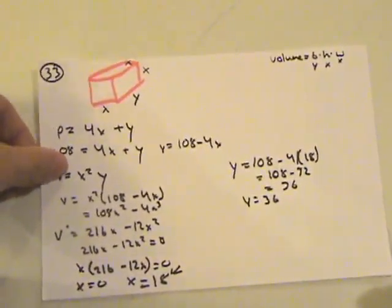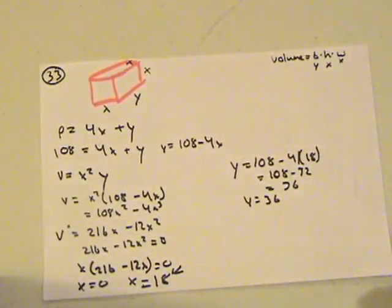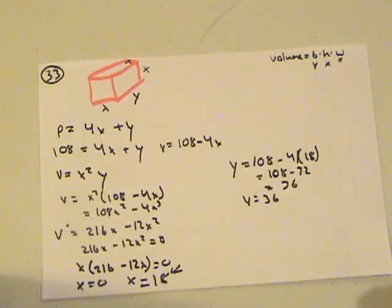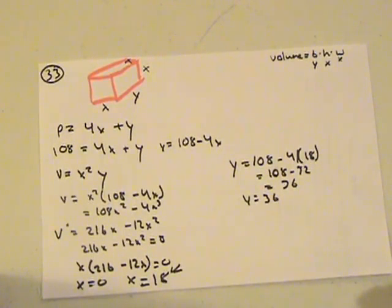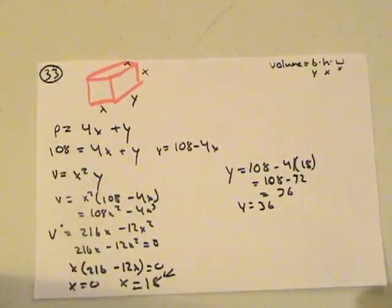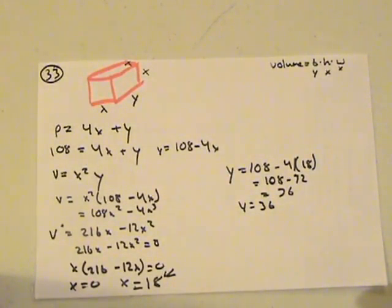And then last but not least, we have 33. So 33 is a rectangular package that you're sending through mail. And we have to have a maximum combined length and girth, which is just all these x's together of one side, of only 108 inches. And we have to maximize the volume.